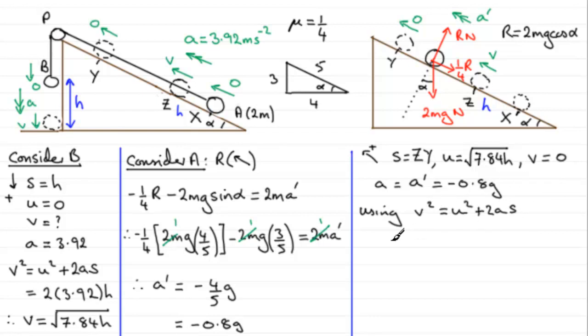So v squared, well v is 0 so v squared is going to be 0, and that's going to equal u squared. So if we square u we're just going to be left with 7.84h. And then we've got plus 2 times a, a is minus 0.8 g, and we're looking for s. I won't write s as ZY, I'll just leave it as s.